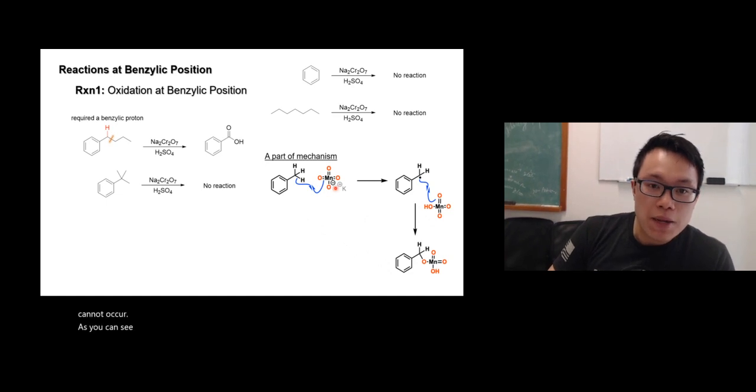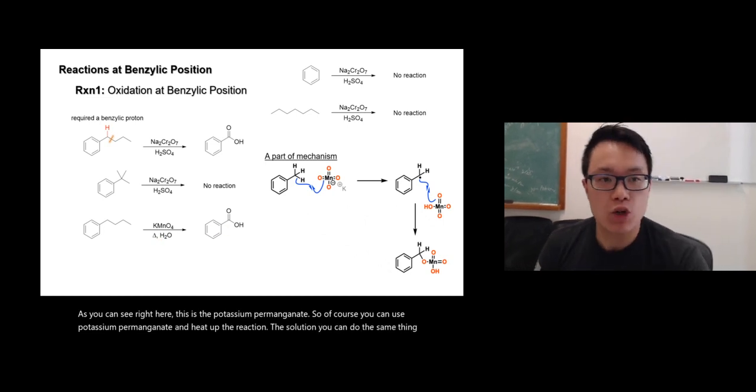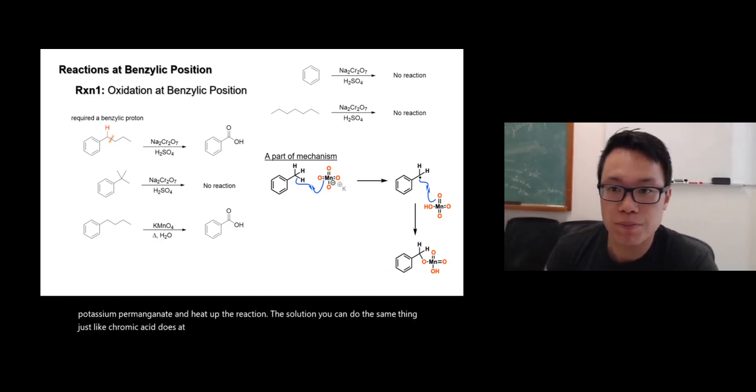As you can see right here, this is potassium permanganate. Of course, you can use potassium permanganate and heat up the solution. You can do the same thing, just like chromic acid does at the top right here.